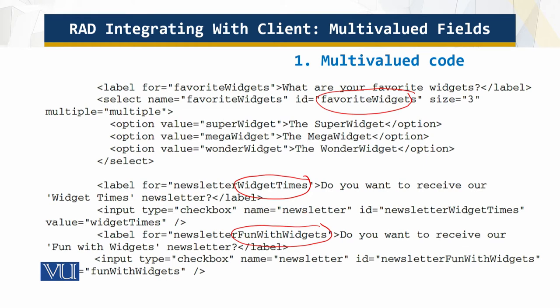So how can you handle multi-valued fields in your PHP scripts? The trick is to add square brackets after the field name in your HTML form. Then when the PHP engine sees a submitted form field with a name having square brackets at the end, it creates a nested array of values. We then use the super global array of those values.